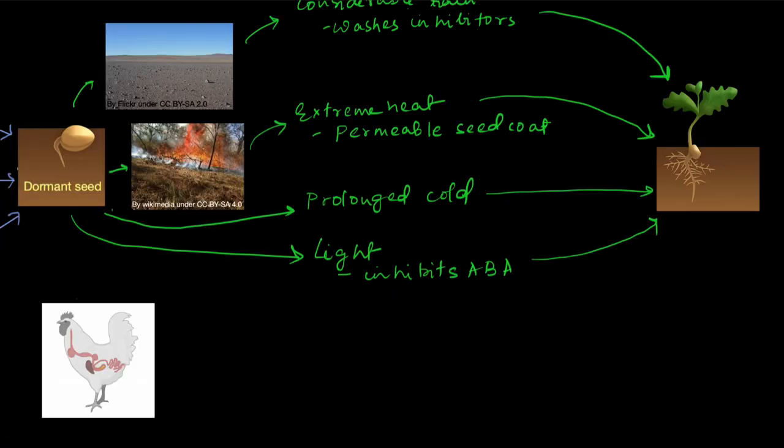Now suppose a seed is eaten by an animal, let's say a hen. The seed will naturally pass through its digestive tract. It won't get digested completely, but what will happen is the digestive enzymes will soften the hard seed coat of the seed. So if the seed was dormant, it will no longer be dormant after it's passed through the digestive tract of the hen.